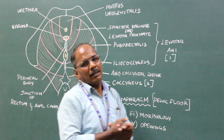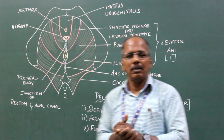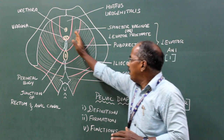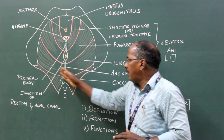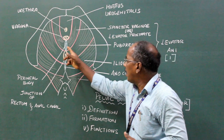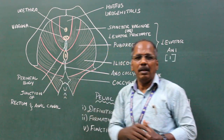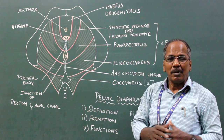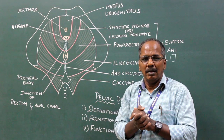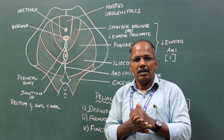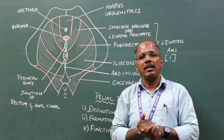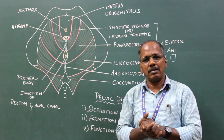Applied anatomy: injury to the pelvic diaphragm due to rupture of the perineal body during difficult childbirth may lead to uterine prolapse and rectal prolapse.